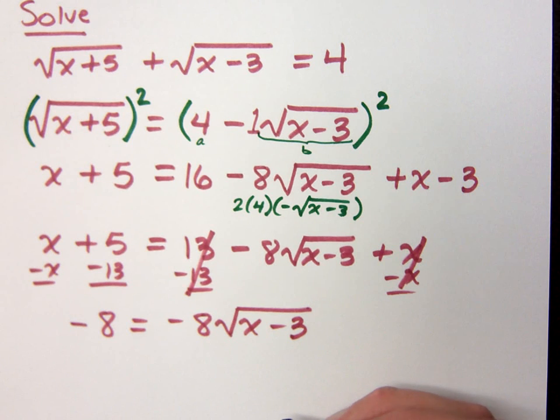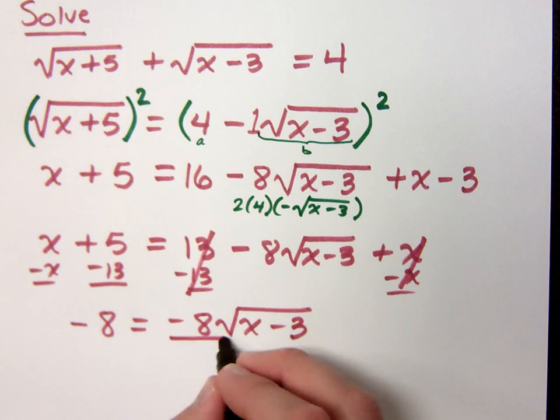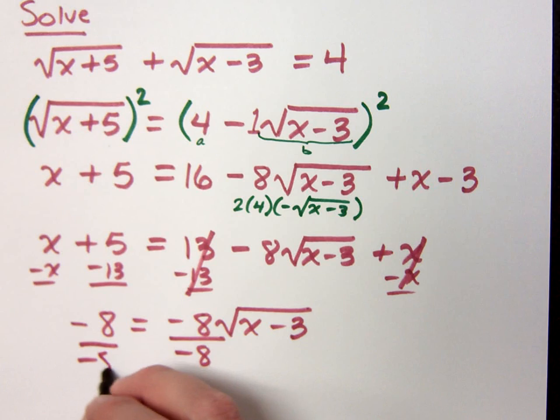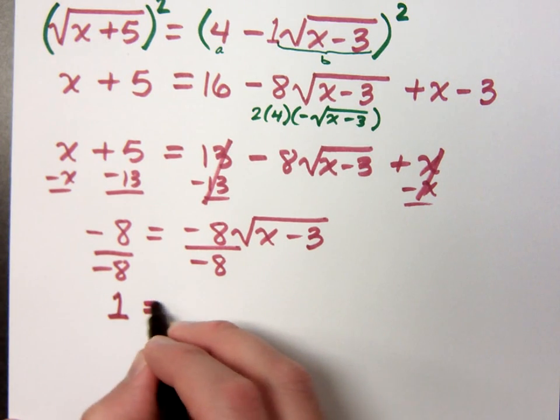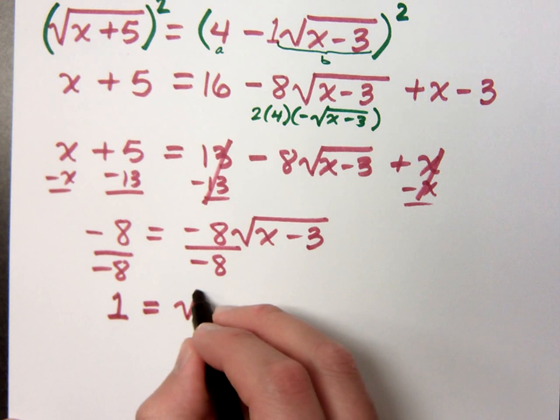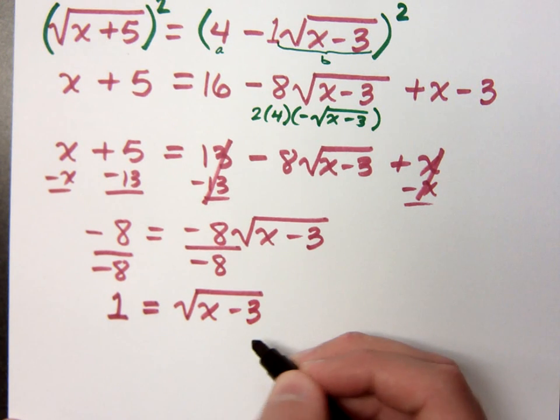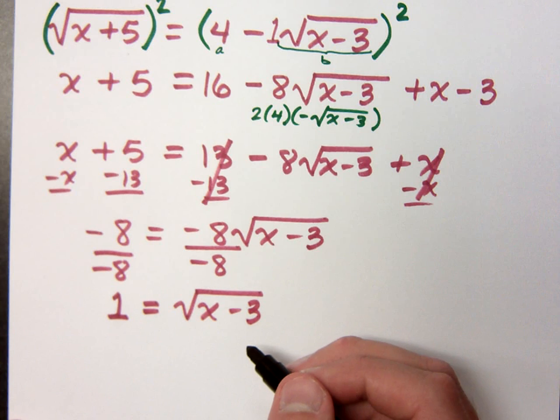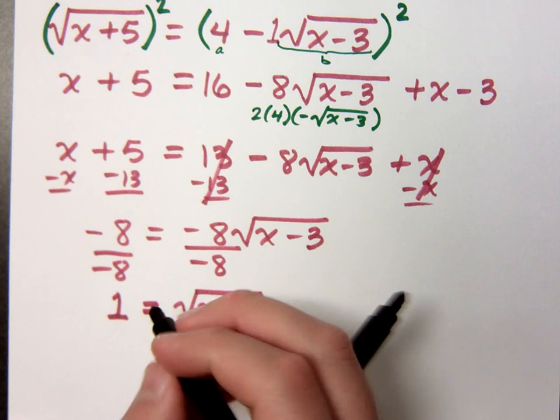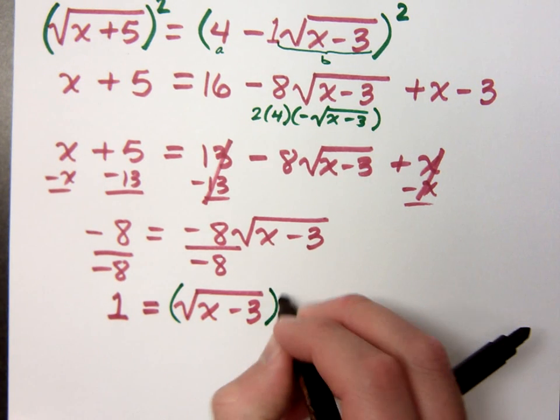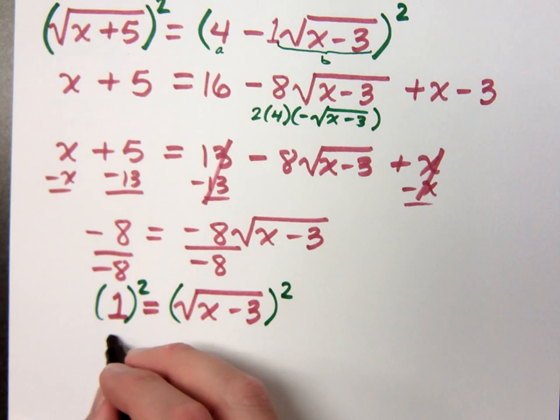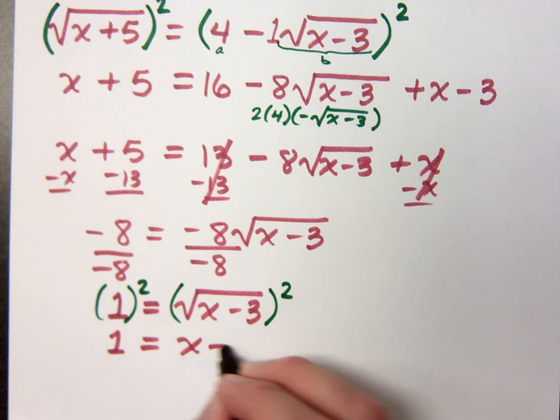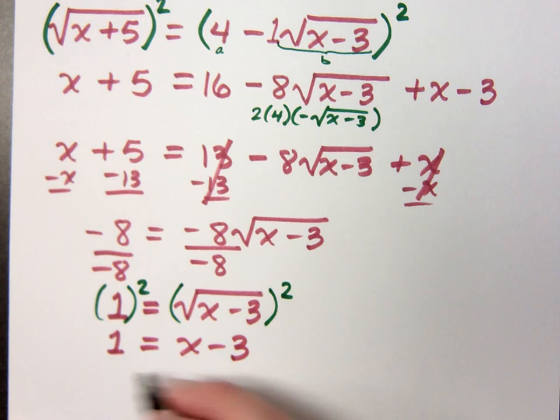So we have negative 8 is equal to negative 8 times the square root of x minus 3. So let's finish getting that radical by itself. And we can do that by dividing both sides by negative 8. So we have 1 is equal to the square root of x minus 3. So we have this radical isolated, now we have to use the power property again. So once, and this problem just was not good enough, we had to use it twice. So we get 1 is equal to x minus 3, and then naturally we have that 4 is equal to x.